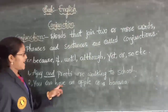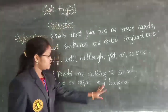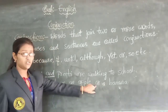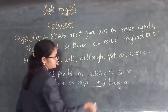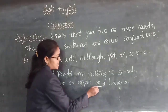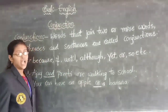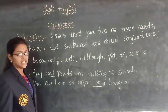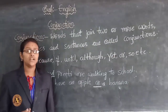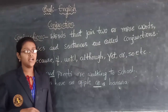See the second example: 'You can have an apple or a banana.' Here we have combined two words — apple and banana — using the conjunction 'or'. So in the second sentence, 'or' is the conjunction, and in the first sentence, 'and' is the conjunction. We use these conjunctions to join two words in a sentence. Conjunction means nothing but words that join two words, phrases, or sentences.